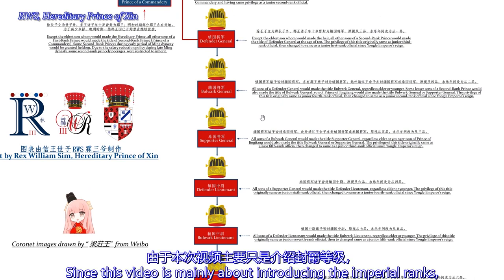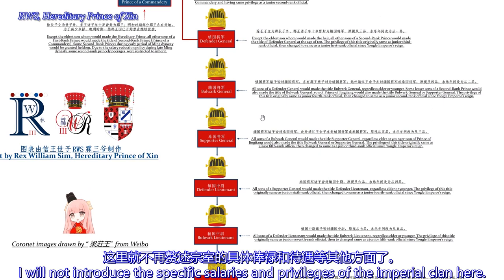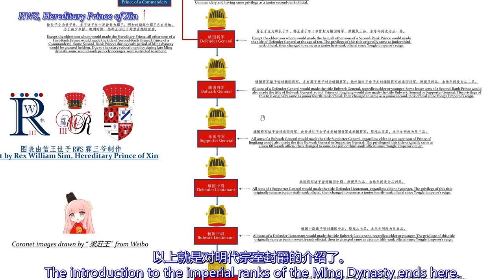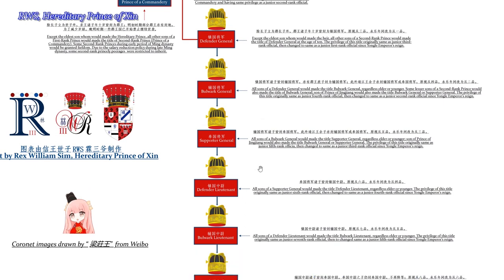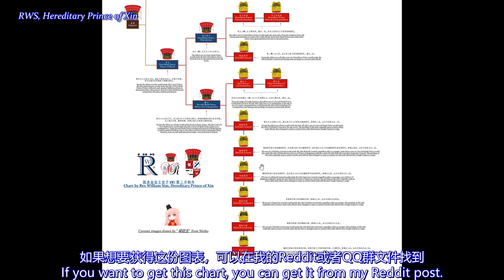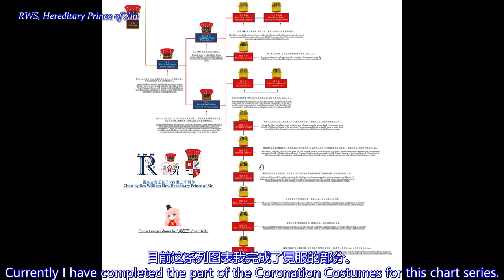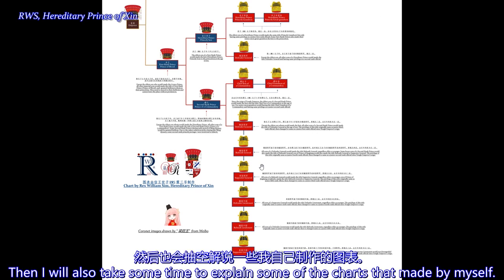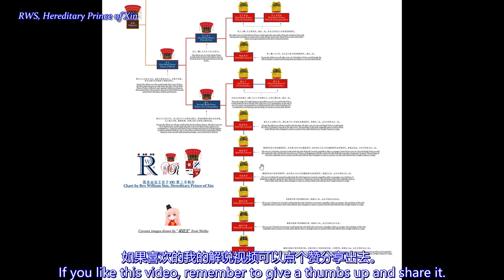Since this video is mainly about introducing the imperial ranks, I will not cover the specific salaries and privileges of the imperial clan here. The introduction to the imperial ranks of the Ming Dynasty ends here. If you want to get this chart, you can get it from my Reddit post. Currently, I have completed the part on coronation costumes for this chart series, and I may create a chart about the salaries of imperial clansmen. I will also take the time to explain some of the other charts I've made. If you like this video, remember to give a thumbs up and share it. Thanks for watching.